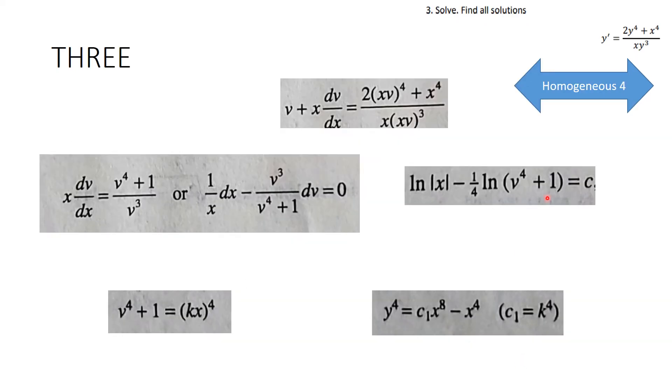Number three, you were to find all solutions to this problem. This is homogeneous of degree 4, because each of these have exponents that add up to 4. That means we can do a substitution.